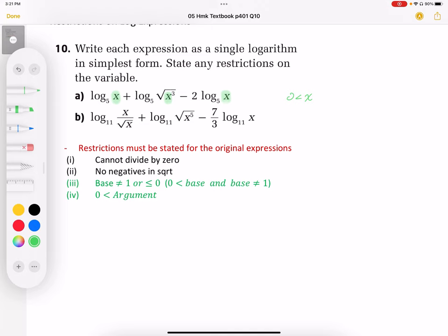For B, for B here, we have the same thing. We have the x can't be zero, it has to be positive. This has to be positive as well. We also have this divide by zero. However, because x can't be equal to zero, that takes care of the divide by zero as well.